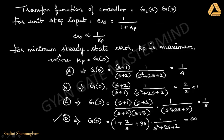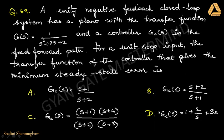For minimum steady-state error, Kp must be maximum. The formula for steady-state error for a unit step input is 1/(1 + Kp), so the steady-state error is inversely proportional to Kp. For minimum steady-state error, we need maximum Kp.